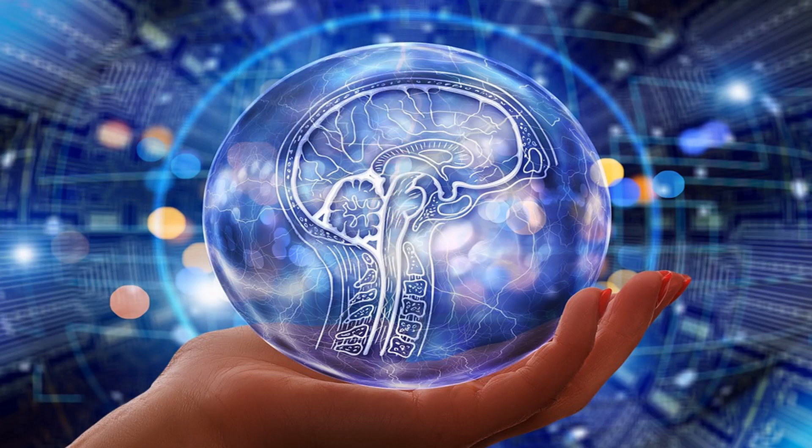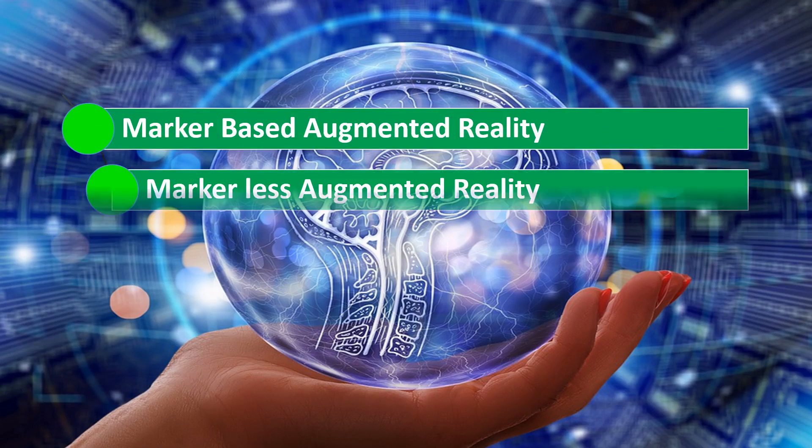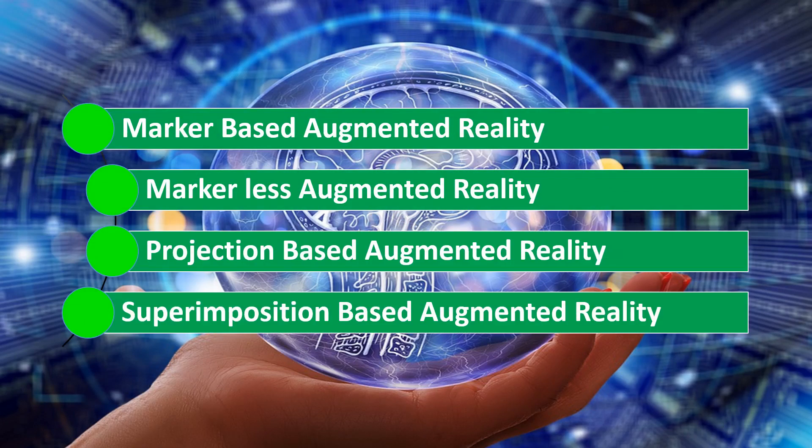Augmented reality can be of four types: marker-based augmented reality, marker-less augmented reality, projection-based augmented reality, or superimposition-based augmented reality.